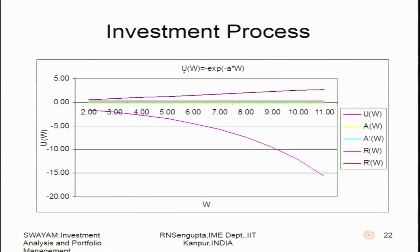The plot for the exponential utility function uses the same colour scheme: U in pink — showing an exponential curve heading toward the fourth quadrant — A in yellow (constant, flat line), A' in bluish colour, R in violet, and R' in brown.